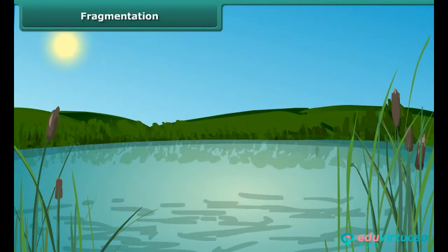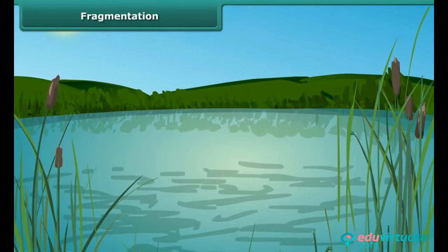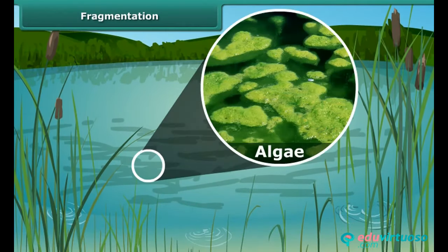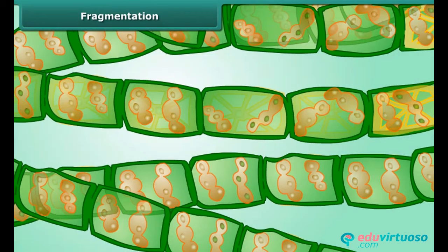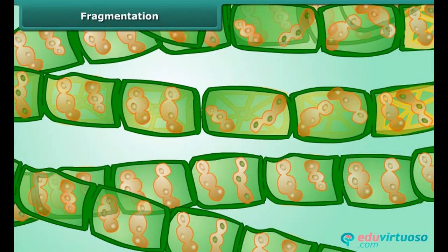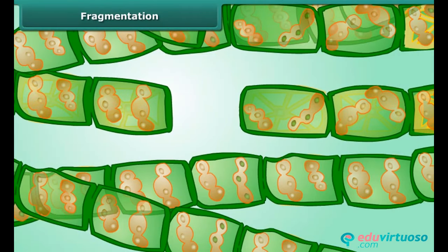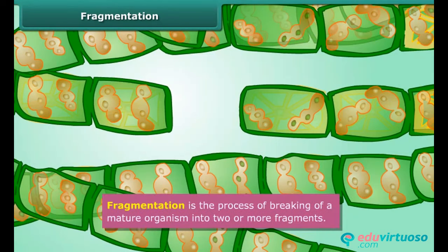Fragmentation. Have you ever noticed green-colored patches in a pond? These are algae. Algae reproduce asexually by fragmentation. Mature algae breaks up into smaller fragments, and these fragments grow into individuals. Fragmentation is the process of breaking of a mature organism into two or more fragments.